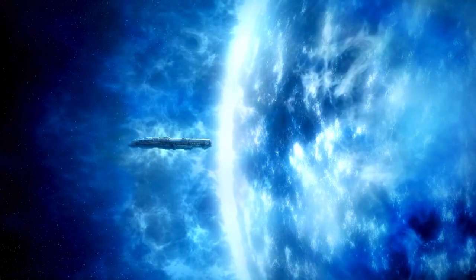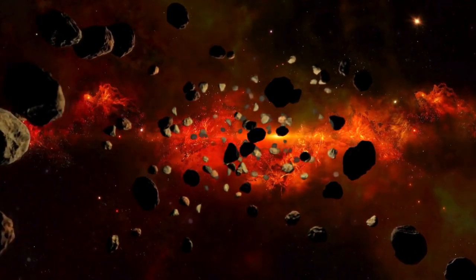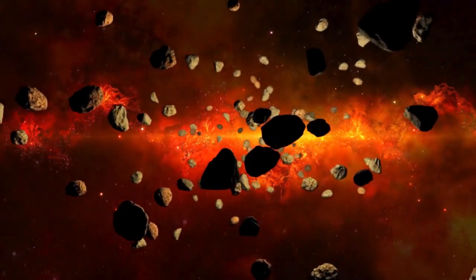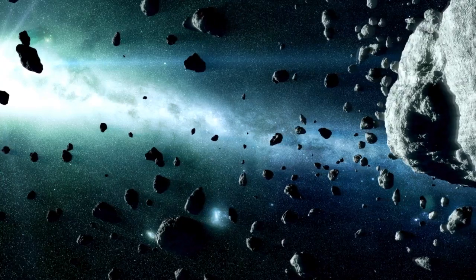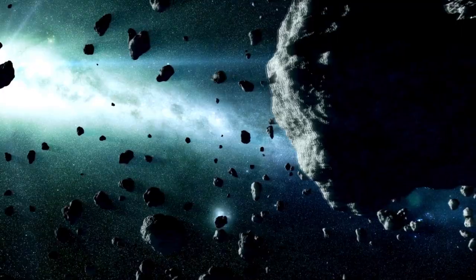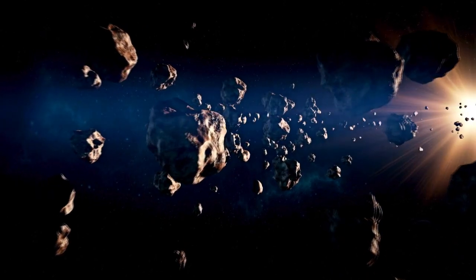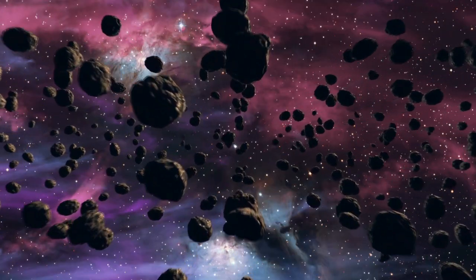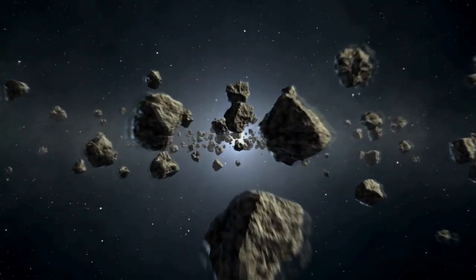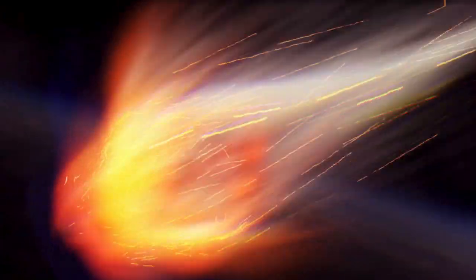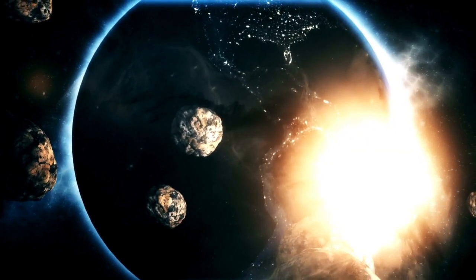2024 PT5, our temporary mini-moon, is an asteroid from the Arjuna asteroid belt, which typically orbits the Sun. Due to slight variations in the Sun's gravitational field, the asteroid was pulled out of its usual orbit and captured by Earth's gravity. It's expected to stay with us until the end of November. In fact, it won't even complete a full orbit around Earth, it will follow a horseshoe-shaped trajectory. The last time something like this happened was in 2020 with 2020 CD3, which stayed with Earth for a few months before drifting away. Similar events occurred in 2006 and 1992, and likely many other times when our instruments weren't advanced enough to detect these close approaches.